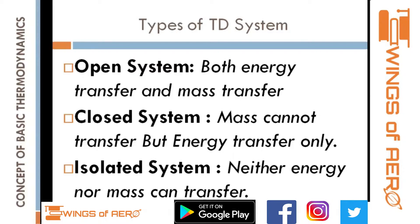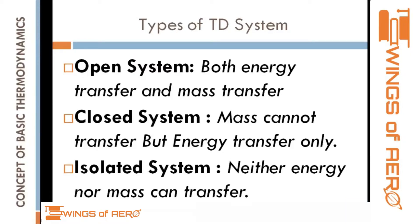As an example of an open system, take a container, pour water into it, and place it on a stove. As the water boils, we are supplying heat energy, and water evaporates — that is mass transfer. Since both heat energy and mass transfer occur, this is an example of an open system.